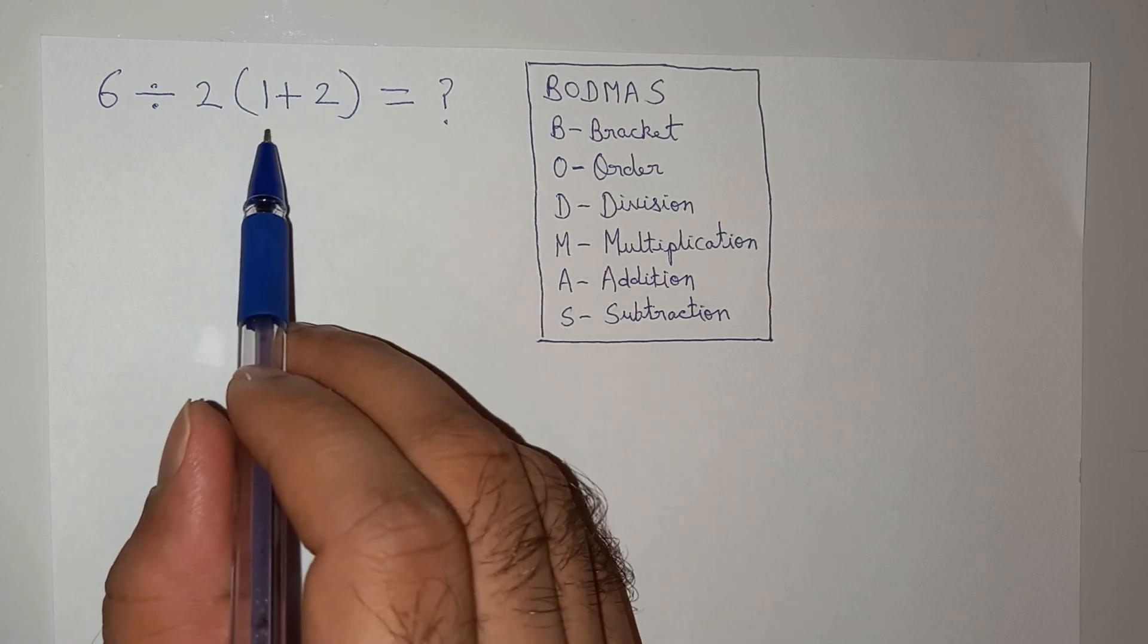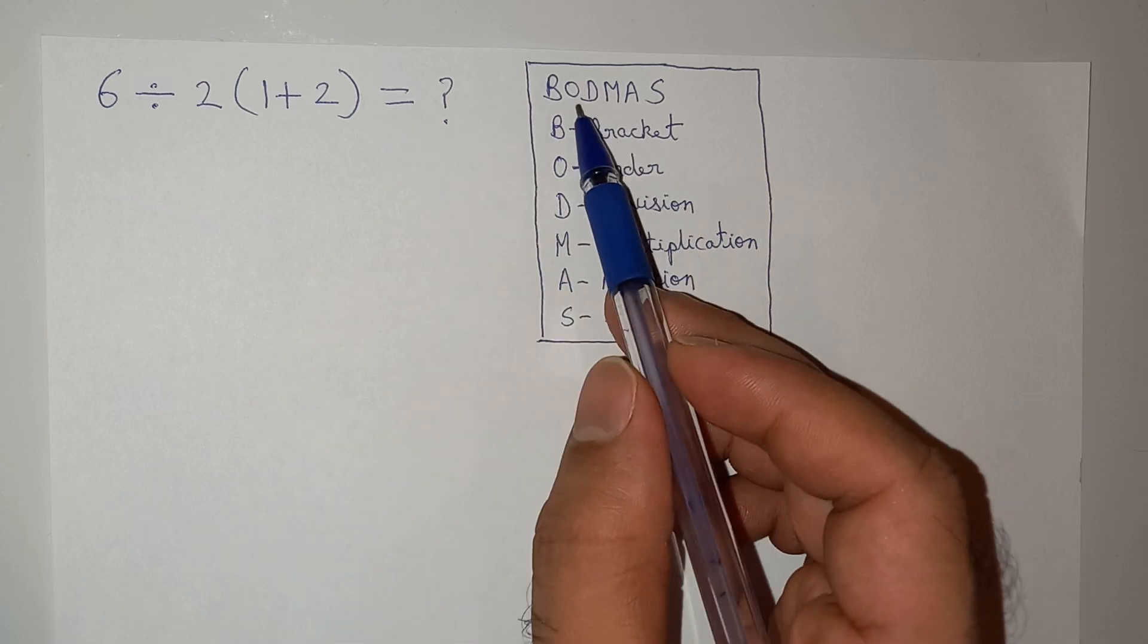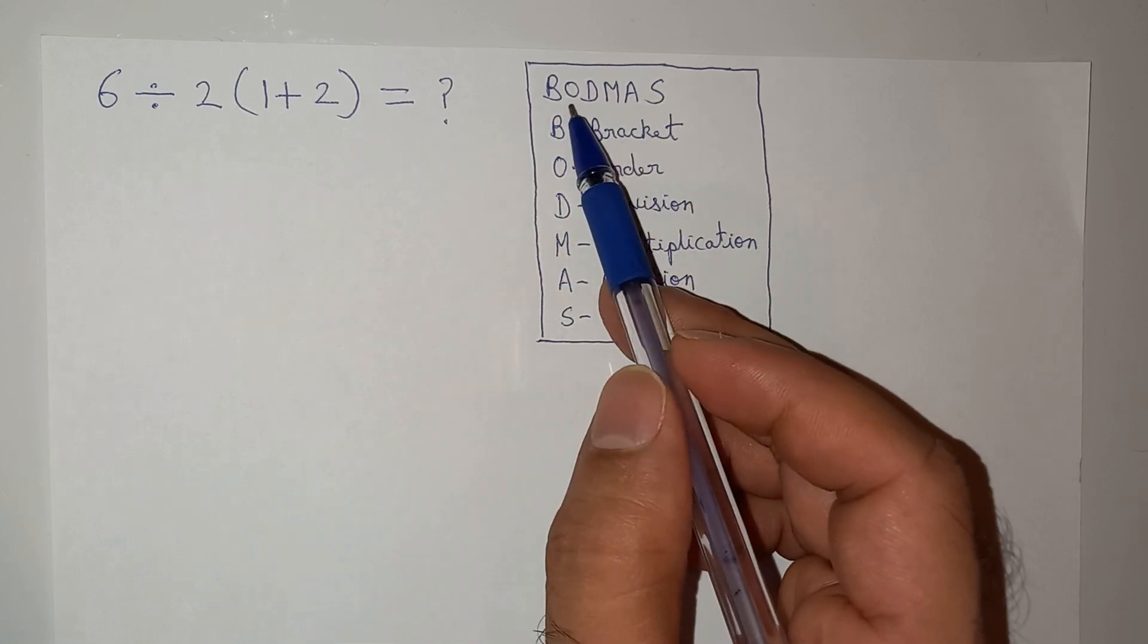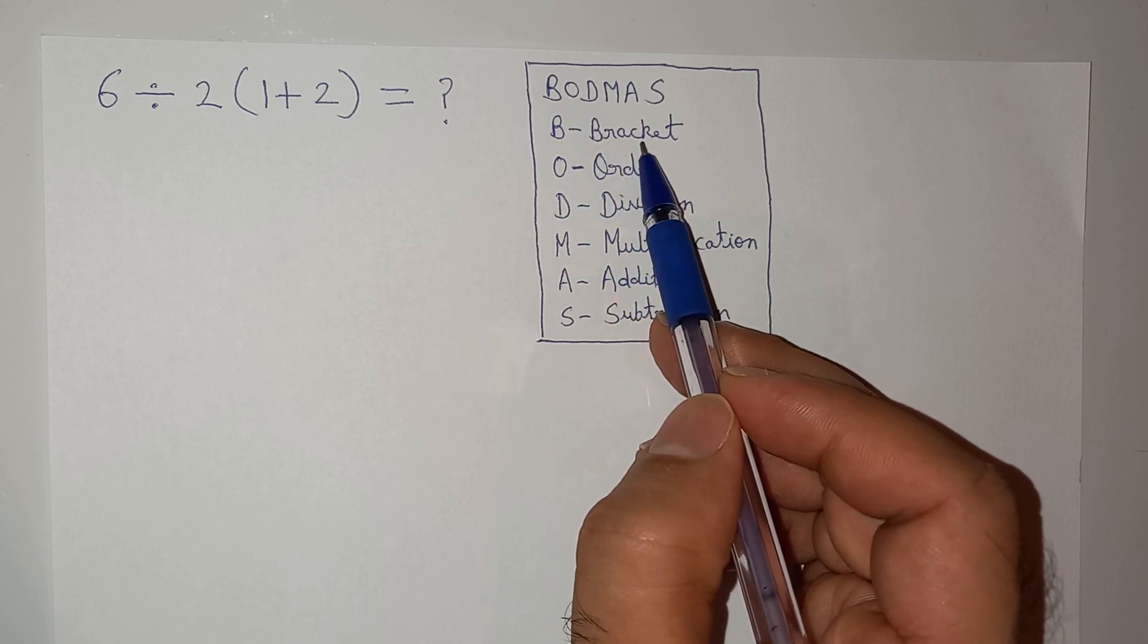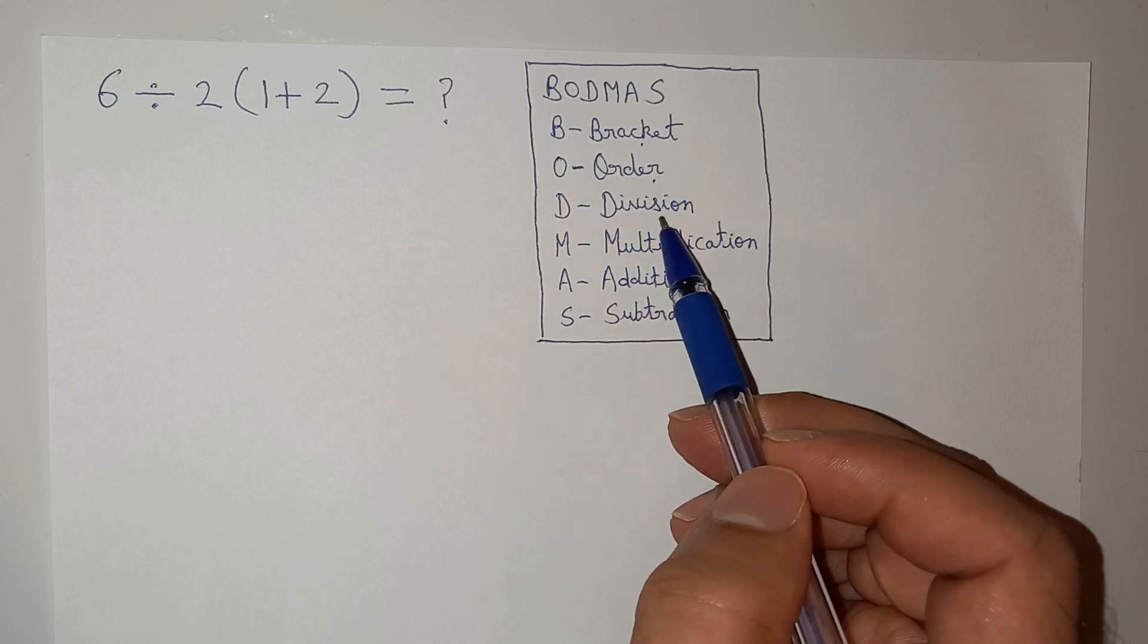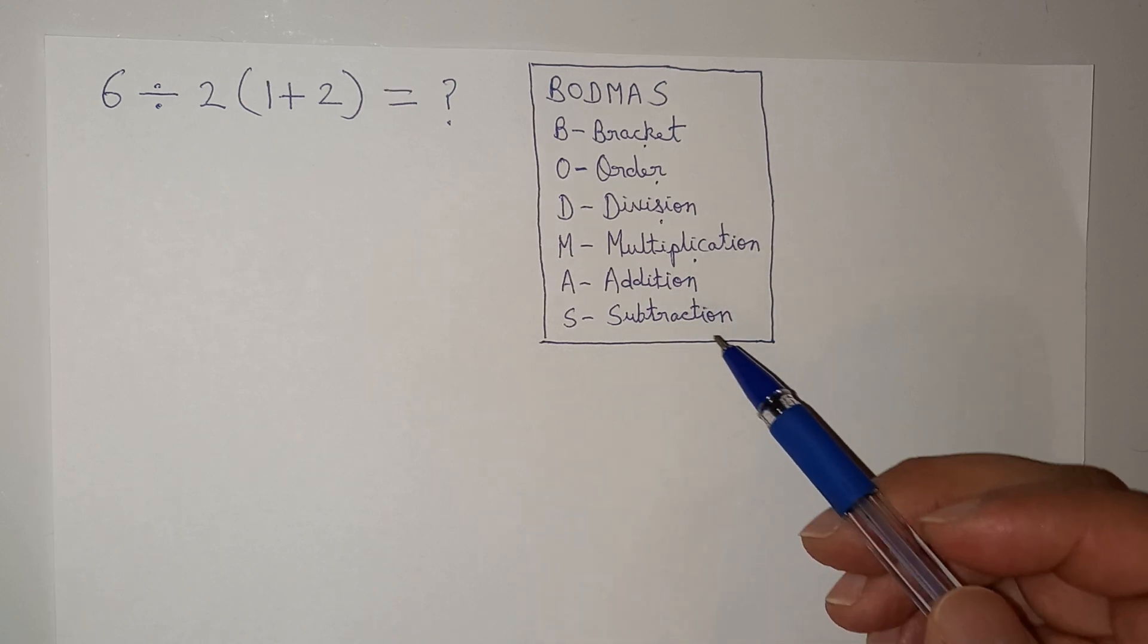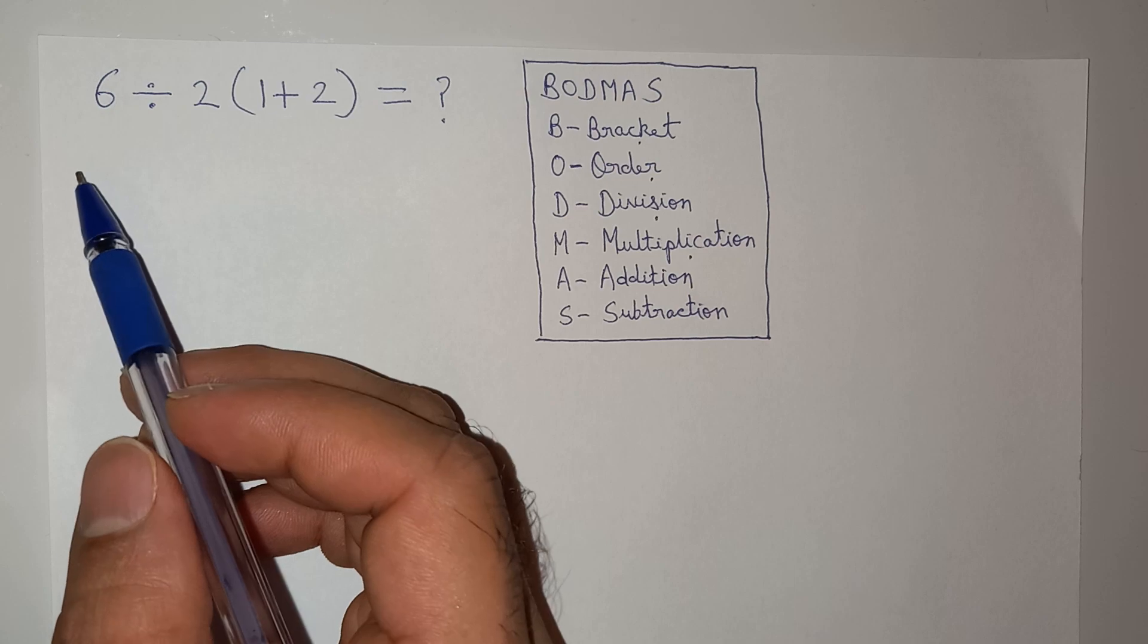To solve this question, I am going to use the very basic BODMAS rule, which says that first we have to use Brackets, then Order, then Division, then Multiplication, then Addition, and finally Subtraction.